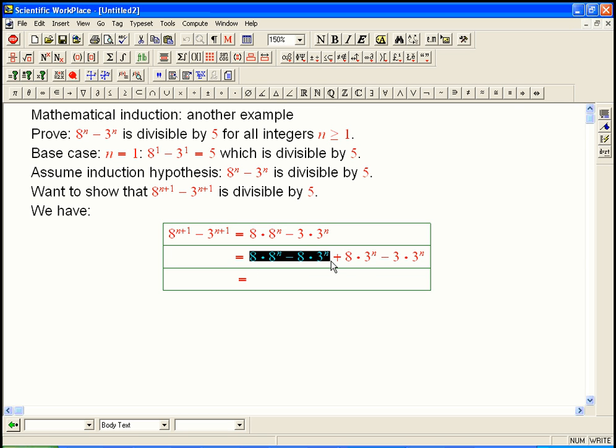Then why is that useful? It's because these guys are going to group into something where the 8 is a factor. So that's going to be 8 × (8^n - 3^n). Well, I don't know why that's useful, but let's see. Then the rest of it, the 3^n is a factor. And I get (8 - 3) × 3^n.